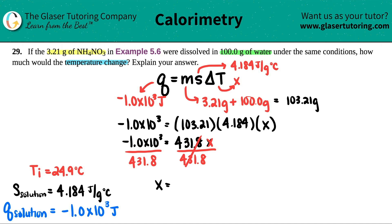So X, which was the change in temperature, is 1000 divided by 431.8. So I get roughly a negative 2.32 degrees Celsius.